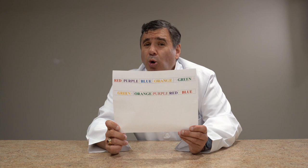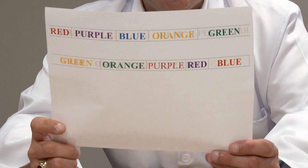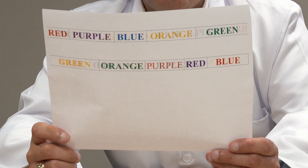So now what I want you to do is look at the second row and tell me what word it is based on the color. Don't read the word — tell me what color it is based on the word. Are you ready? What's the first one? What's the second one? What's the third one? What's the fourth one? What's the fifth one?